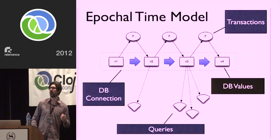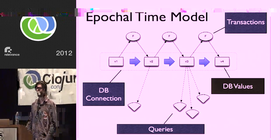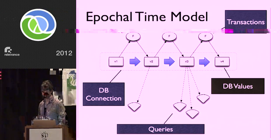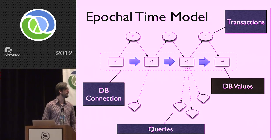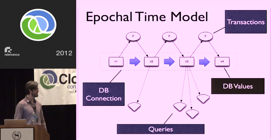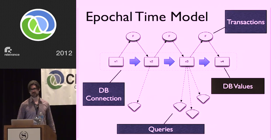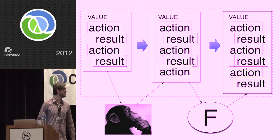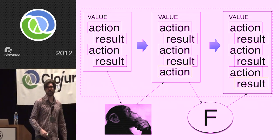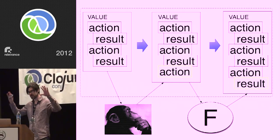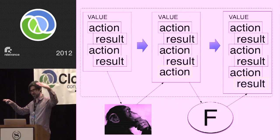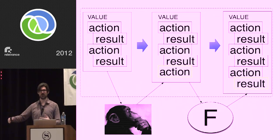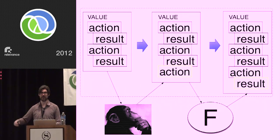Let's go through the process model. The basis and starting point is the epochal time model of Datomic. We're building on Datomic, so that's not a surprise. The only difference is what happens in those little boxes — what those Fs can be. Inside the database we have these sequences of actions and results, and the process of adding stuff to the database is more of a two-step thing.